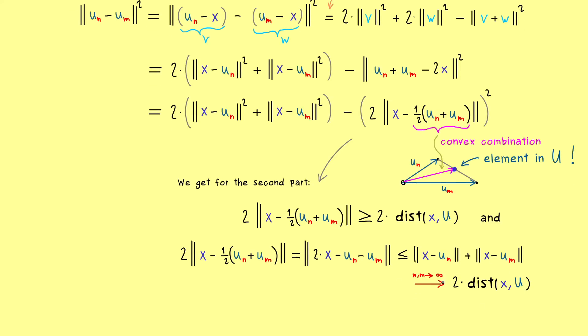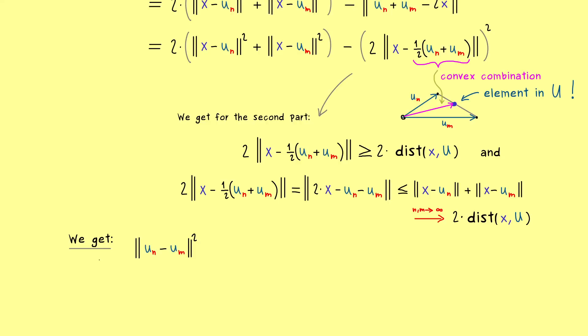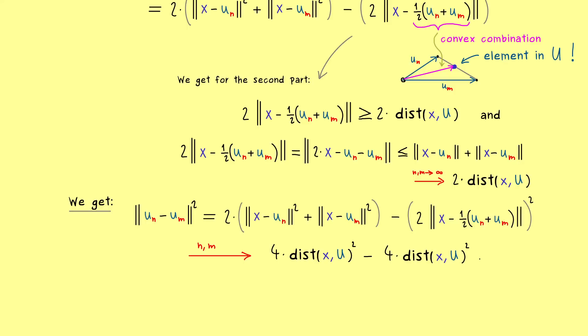Hence this is our upper bound and now the sandwich theorem for sequences strikes. Which means the sequence on the left hand side here has to be convergent and the limit is given by 2 times the distance x to U. And this one we can use to form our limit n and m to infinity on both parts before. So let's make this clear. Now we get the following. So this is the formula from before and now we send n and m to infinity. So by definition of our sequence u_n this thing here converges to the distance x to U squared. And then we also have it here so 2 times times 2 again so we have it exactly 4 times. And now we have shown before that on the right we also have 2 times the distance x to U and also squared. So it's exactly the same and in the limit here we get 0.